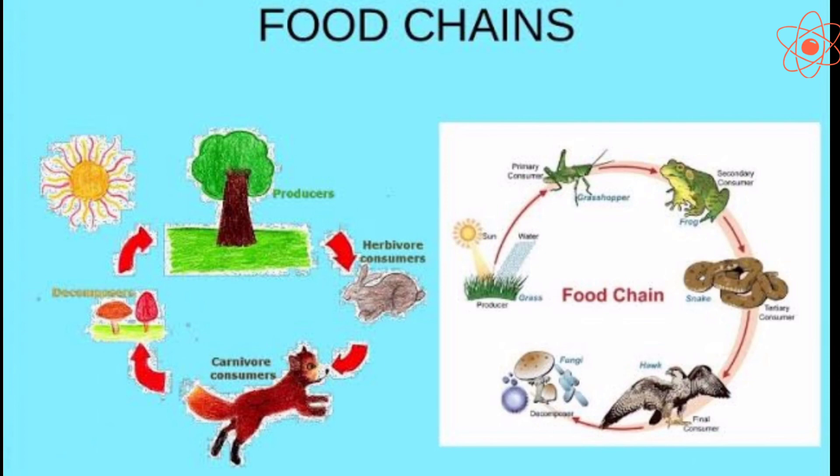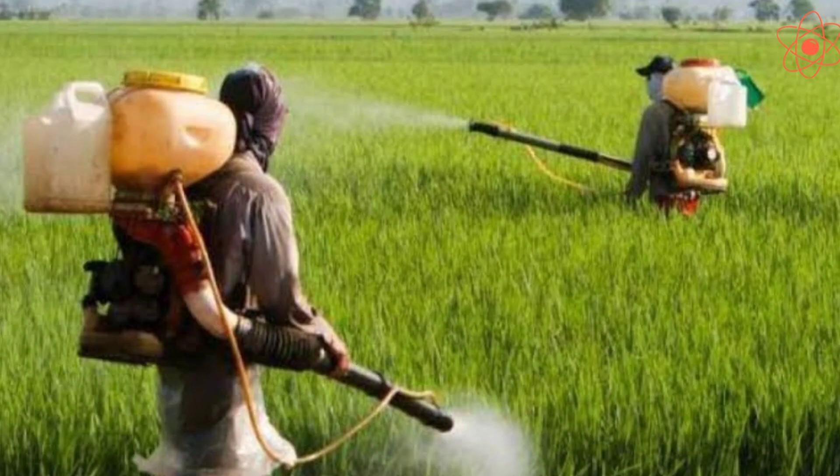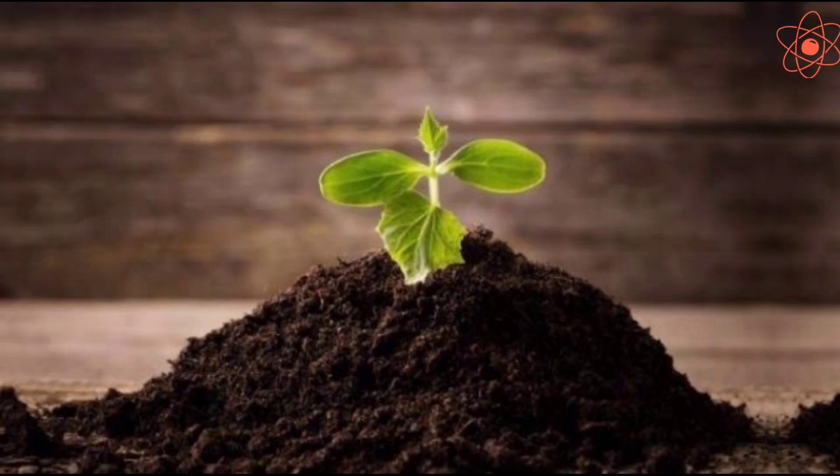Second, overuse of fertilizers causes soil pollution, and thus the fertilizers enter the food chain. Therefore, farmers should avoid the overuse of chemical fertilizers and use natural methods to enrich the soil with nutrients.